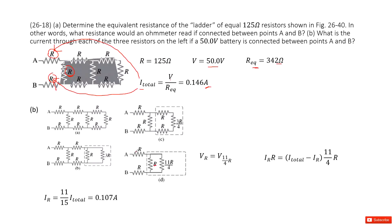So how can we do that? We know for the parallel connection, the voltage equals. So we can see V_R equal to V_11R over 4. So the voltage from this point to this point equals the voltage from this point to this point.